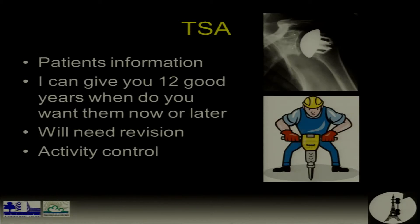The problem is deciding when you want those 12 good years — now or later? To be honest, they always say now. The total shoulder arthroplasty gives patients a forgotten shoulder — normal life. One of my patients was a judo player who had multiple dislocation surgeries and arthritis. He was 37 when he had his shoulder replacement, and he was so happy he went back to doing judo with shoulder arthroplasty. So you can put a prosthesis in a patient, but you cannot put a brain.